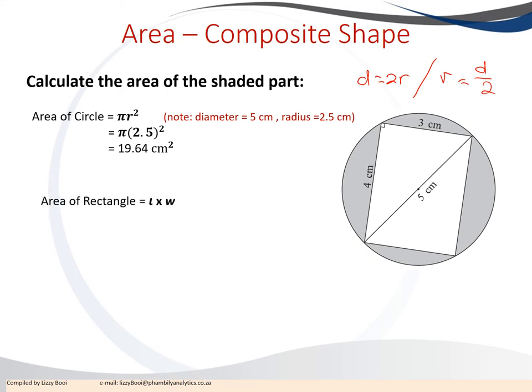Now we calculate the area of the rectangle. We use length times width. The length is four centimeters and the width is three centimeters, so 4 × 3 = 12 centimeters squared.